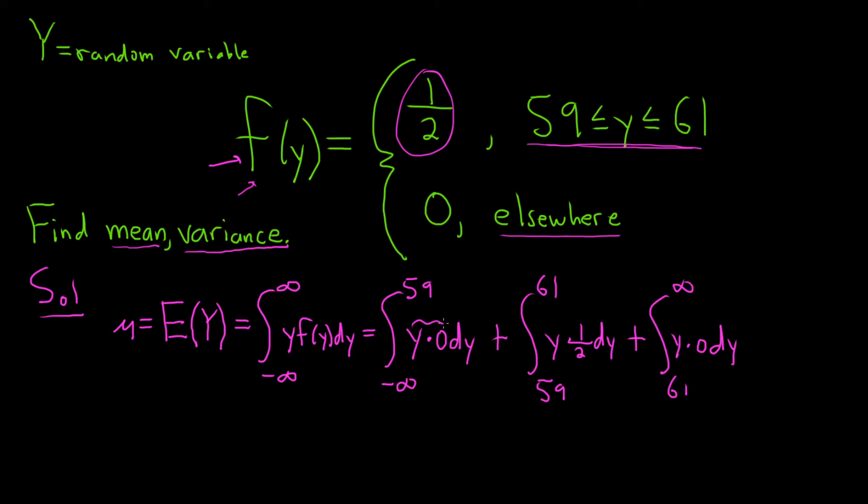Y times 0 is 0. When you have a definite integral and you integrate 0, you get a constant, but then we have limits of integration, so you end up subtracting the constant. This whole integral becomes 0. Likewise, this is going to be 0. So we only have to focus on this piece here. Mu is equal to the definite integral from 59 to 61, 1 half y dy. All right, good stuff.